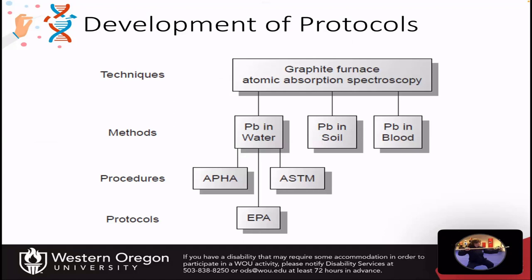Here's a development scheme example: the technique is graphite furnace atomic absorption spectroscopy, used to measure the concentration of lead in water, soil, or blood. For water samples, procedures were developed by the American Society for Testing and Materials (ASTM) and the American Public Health Association (APHA). Those procedures were then adopted by the EPA and developed into stringent protocols that any laboratory must use if they are measuring lead concentrations in water for EPA assessment.